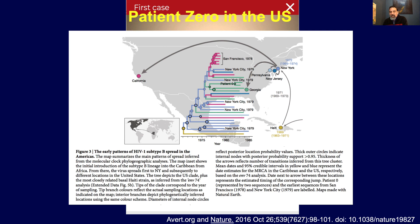This matches what we know about the natural history of HIV — the incubation period, or the time from infection to onset of AIDS, is about 9 to 10 years. The first AIDS cases began to appear as early as 1978 in the U.S. So if you assume a 9 to 10 year incubation period, it suggests that transmission could have occurred in the U.S. as early as 1968.